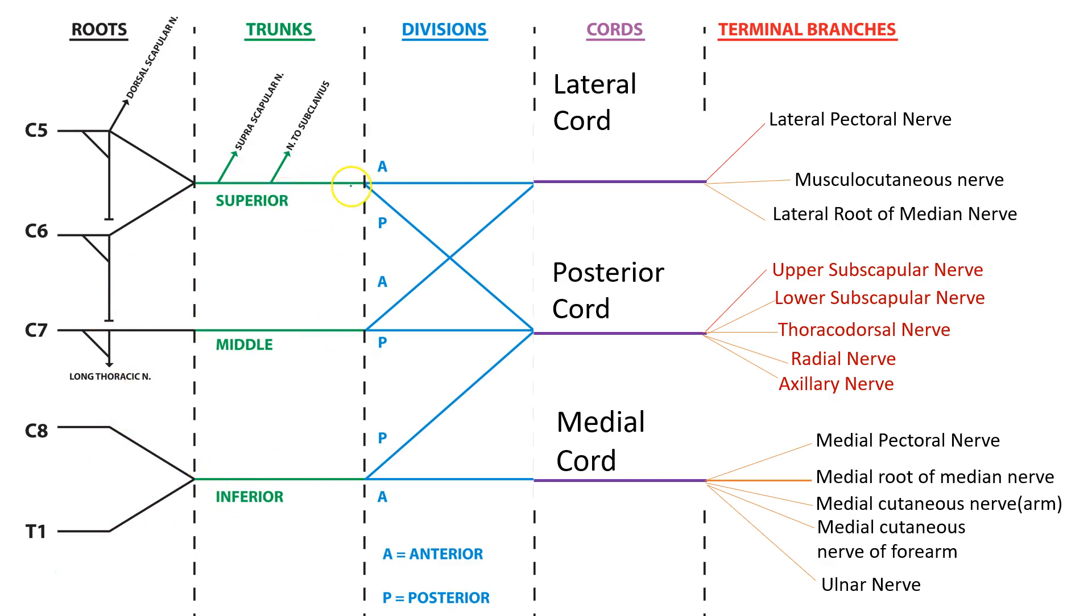The superior trunk gives nerve to subclavius and suprascapular nerve whereas C5, C6 and C7 gives the long thoracic nerve. C5 gives the dorsal scapular nerve. So, these are four terminal branches which are unrelated to the terminal branches of the brachial plexus.